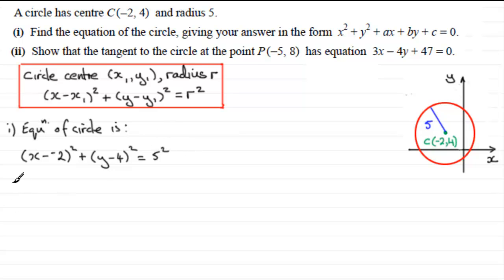If we clean this up, this is going to be (x + 2)² + (y - 4)² = 25. If we expand each of the brackets, we expand (x + 2)² to get x² + 4x + 4. If we square out the second bracket, we get y² - 8y + 16, and that equals 25.